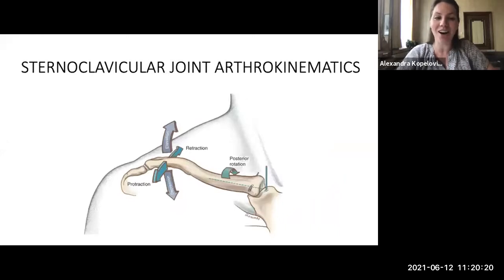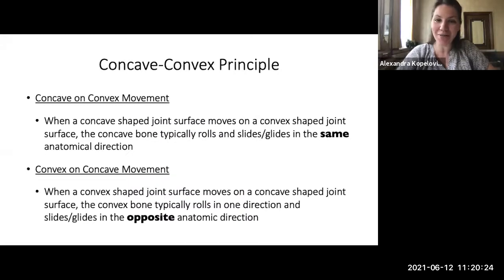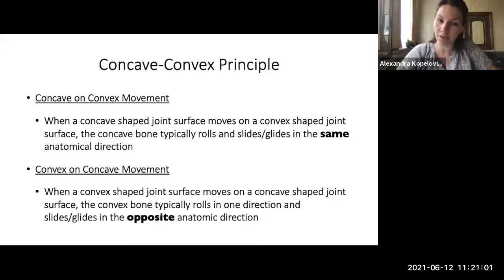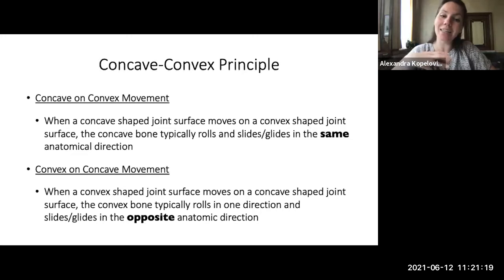Before examining sternoclavicular arthrokinematics, let's review the concave-convex principle. When a concave joint surface moves on a convex surface, the bone rolls and glides in the same anatomical direction. When a convex joint surface moves on a concave surface, the bone rolls in one direction and glides in the opposite direction. These rules govern what glide accompanies each osteokinematic movement.